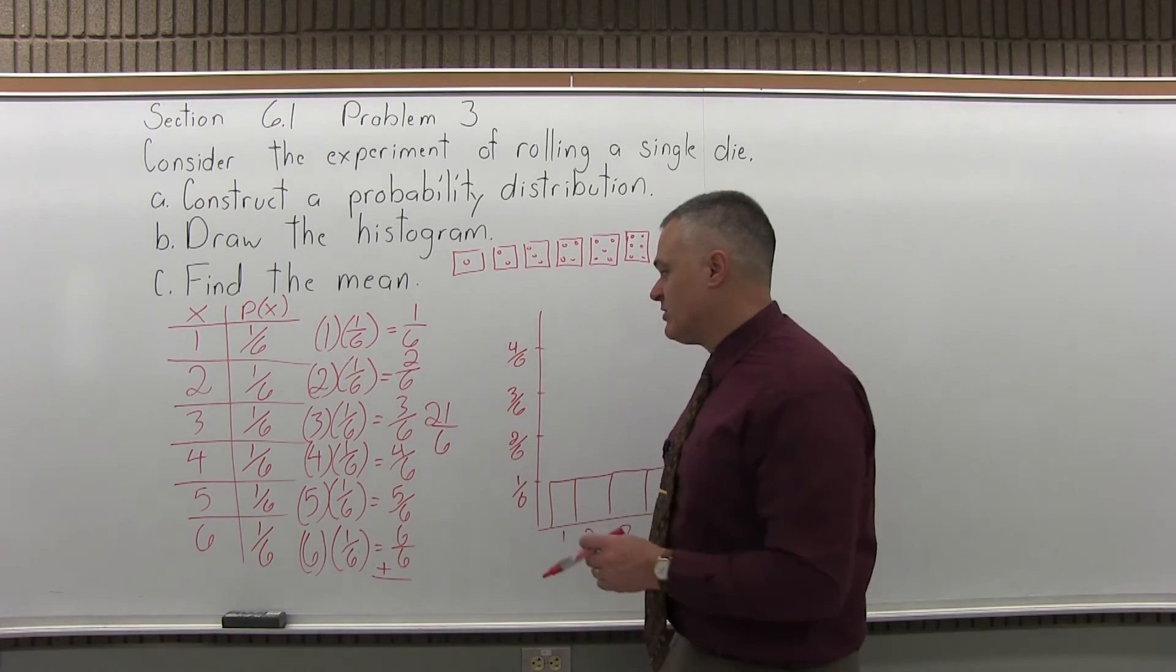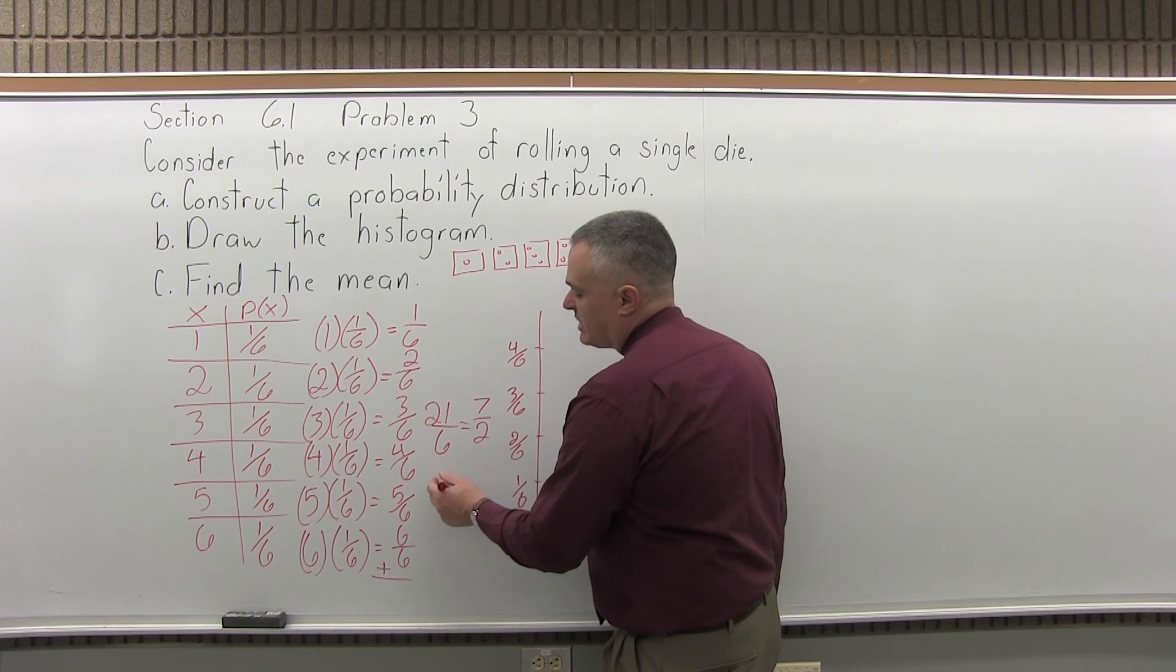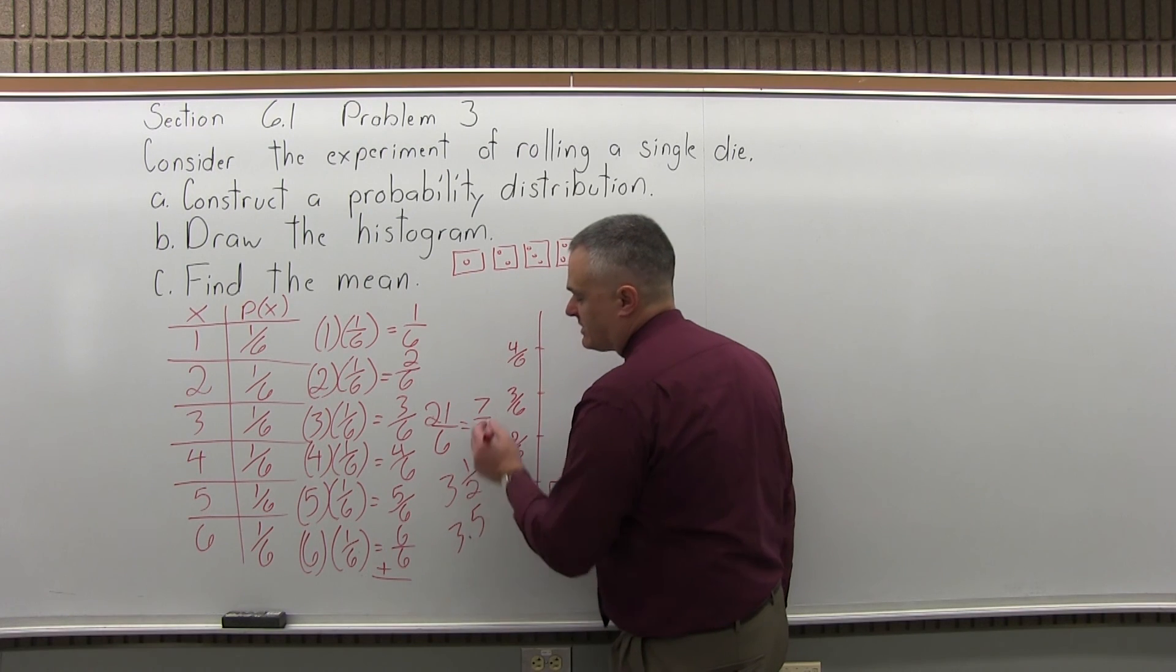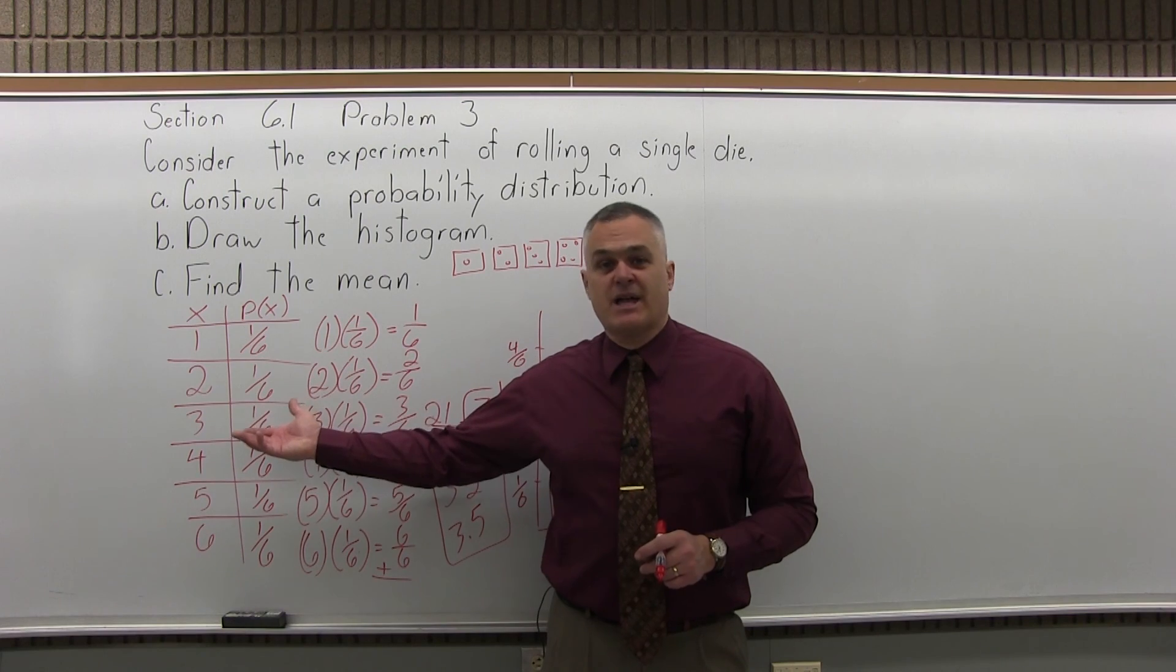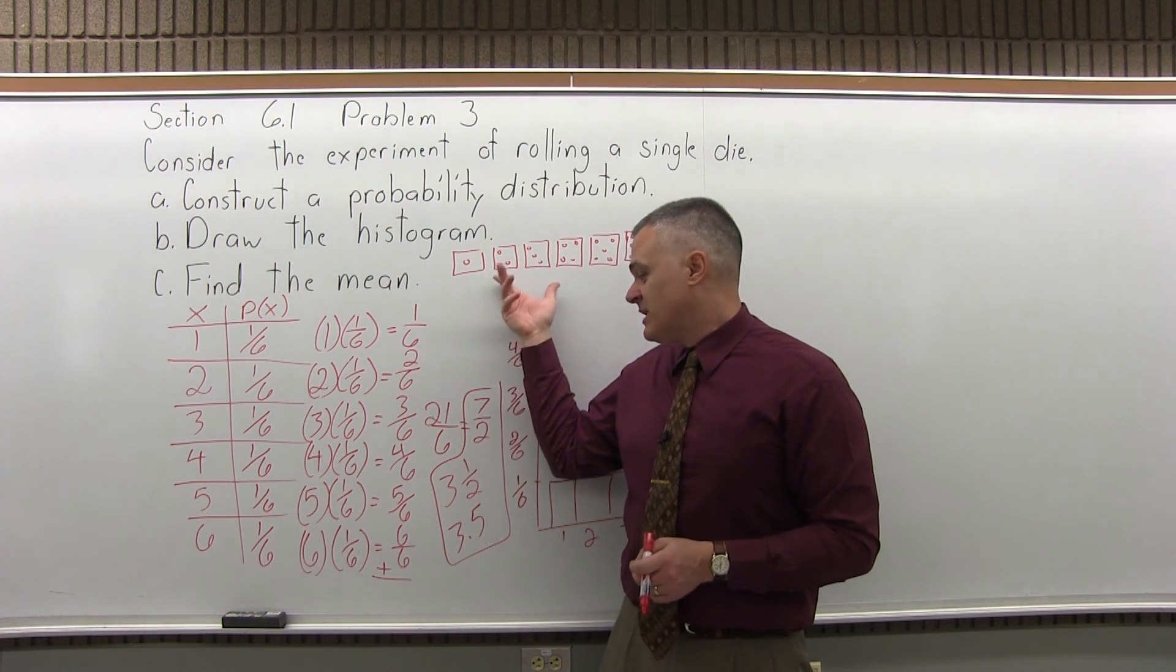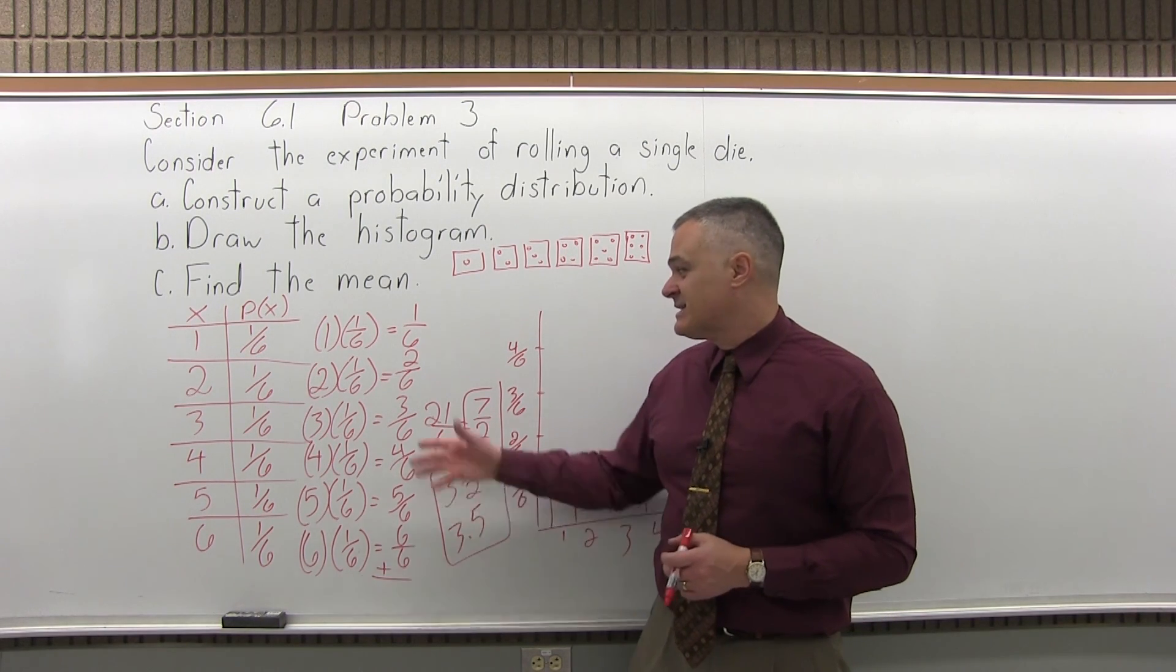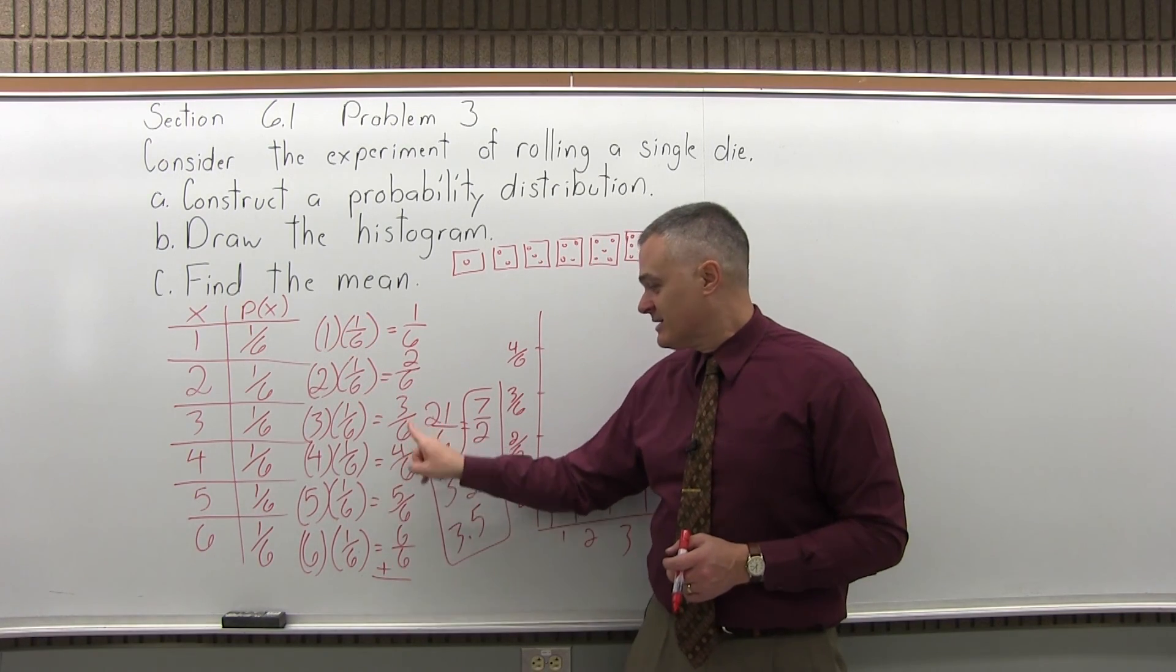21 over 6, now that I can reduce. 3 goes into both evenly, so 3 goes into 21 seven times, 3 goes into 6 twice, so 7 halves, which would reduce to 3 and a half, or 3.5 if you like decimals better than fractions. So if you rolled your single die millions of times, kept track of the results you got, and then divided by the millions of rolls you may have thrown, that average would come out to 3.5. Or you can get that same answer in a minute or two just by multiplying every number in the first column times its probability, taking the answers and adding them together.